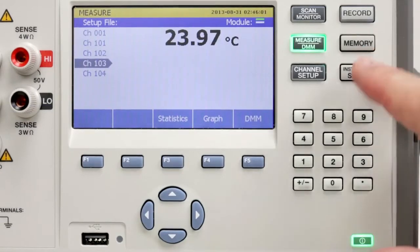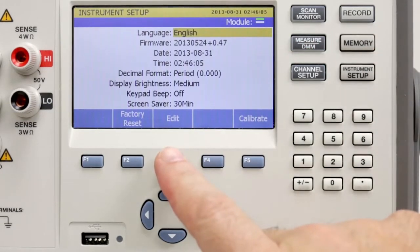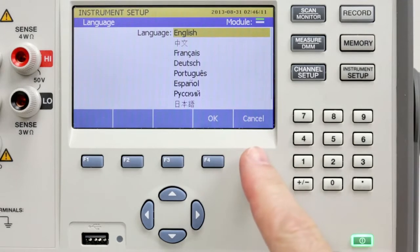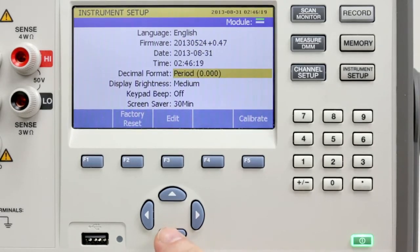Now let's set up the unit. Push the instrument setup button to get started. This allows you to set up your preferences. Menus and displayed text are available in nine languages. You can view firmware level, set date and time, and decimal format. Set display brightness, keypad beeps, and more.